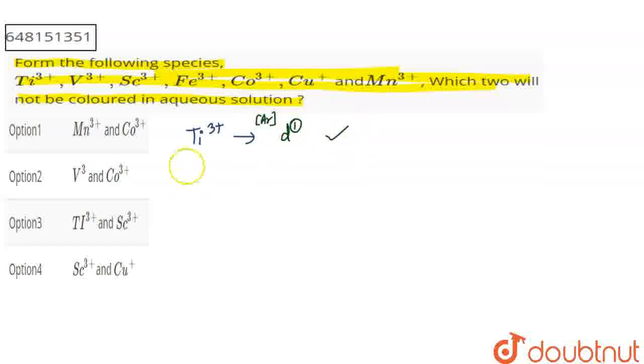Then I have vanadium 3 positive. Vanadium has total 5 electrons, but if you lose 3, this will be configuration 3d², so it will also be colored in aqueous solution.